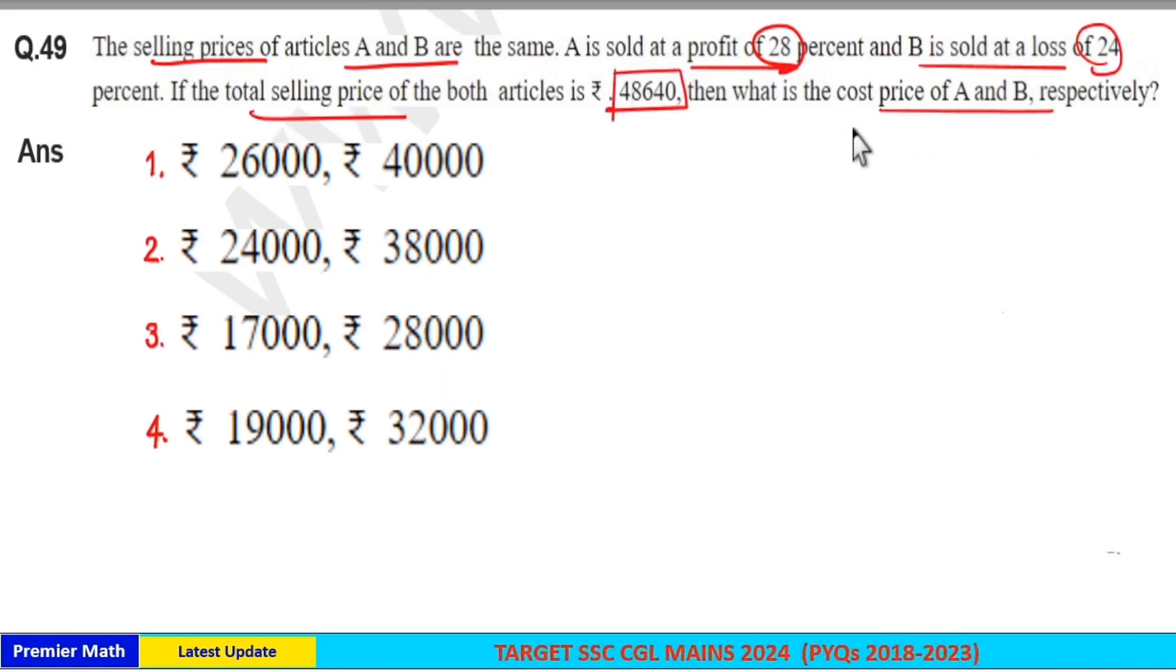Usually in this kind of question we use ratio method, but here profit is 28 and loss is 24 and total selling price is a bigger number. So don't use ratio method, instead go with the usual method. The selling price of articles A and B are same and total selling price is 48,640, means 2SP is equal to 48,640.